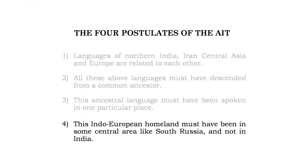The fourth postulate is that this Proto-Indo-European homeland must have been in some central area between Sri Lanka and Scandinavia — that is, in south Russia, and not in India. If it is not in India, that means the Rigveda and Vedic culture came from outside, from south Russia, brought into India by Aryan invaders or immigrants. This is the Aryan invasion theory.